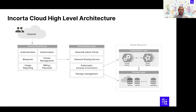And finally, billing and payment. The other group of components is for internal use — it's the admin portal that our support and SRE teams use to manage clusters. This includes network routing services, all the network and security magic, Kubernetes engines used for the computation layer for Incorta clusters — the analytics, loader, and Spark cluster — and lastly the storage management layer: installation volumes, metadata, and data volumes using object storage.